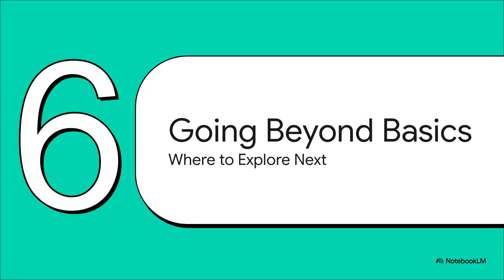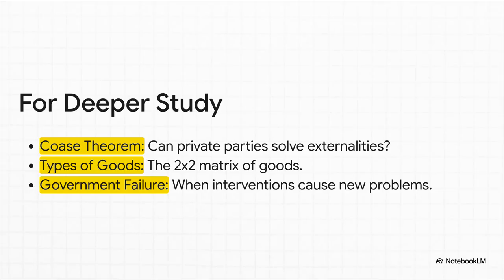Now you have a really solid foundation — you know what market failure is, why it happens, and how to explain it. If you're curious and want to go even deeper, here are a few cool places to explore next. You could check out the Coase Theorem, which asks a fascinating question: maybe private individuals can solve externalities on their own without the government. You could also look up the 2x2 matrix of goods, which is a great tool for classifying all goods into four types.